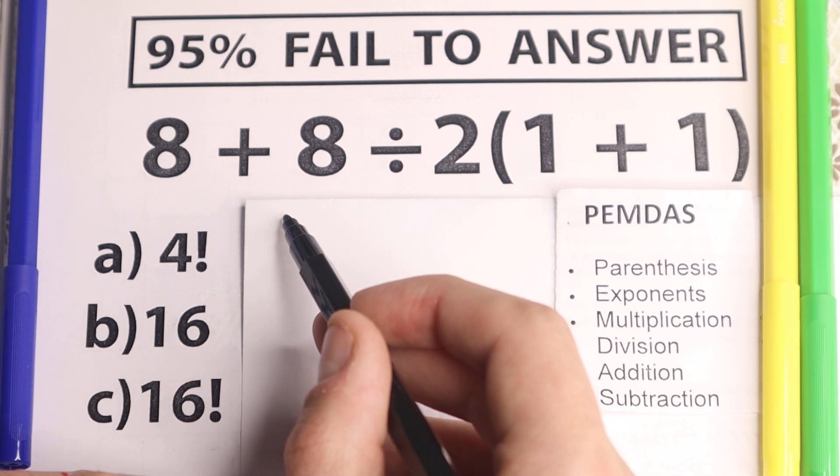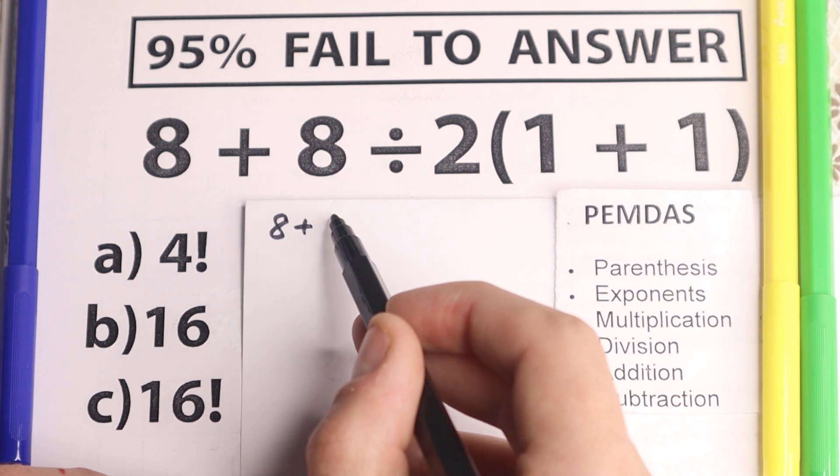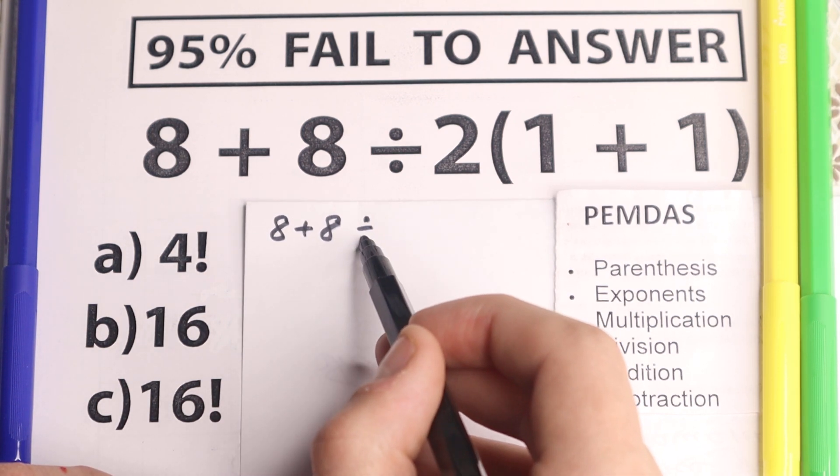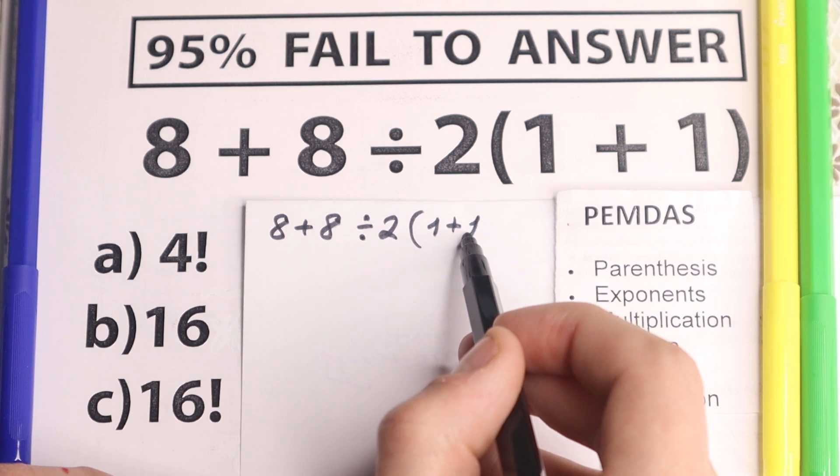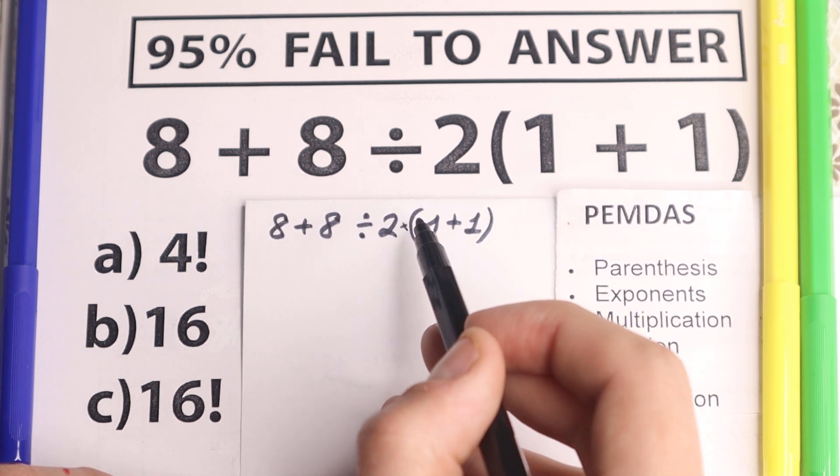According to PEMDAS, I'll just rewrite this problem real quick. So 8 plus 8, we have divided by 2 and in parentheses 1 plus 1, of course multiplication right here, I write right here multiplication.